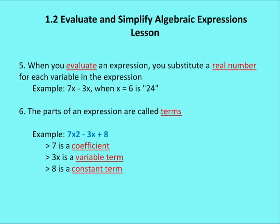When you evaluate an expression, you substitute a real number. So if I have an example, 7x minus 3x, I'm going to substitute a real number for the variable, which would be x, in this expression. So when x is 6, I'm evaluating the expression. And that becomes 7 times 6 minus 3 times 6. So I'm just substituting 6 for the variable x. And I end up with 42 minus 18, which is equal to 24.